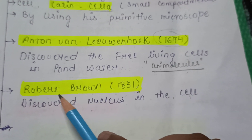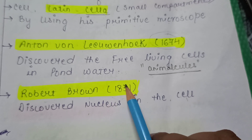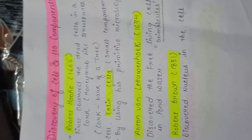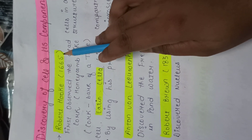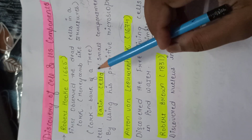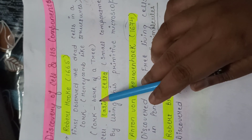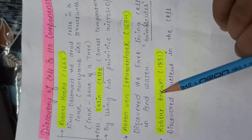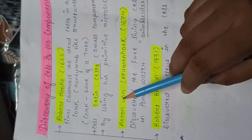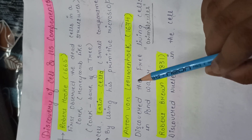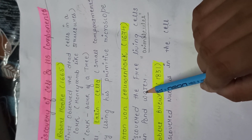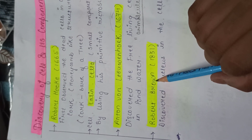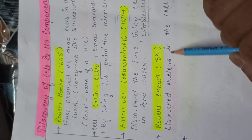After Leeuwenhoek, we have another name: Robert Brown, in the year 1831. He basically discovered the nucleus inside the cell. To summarize: Robert Hooke in 1665 was the first person to observe honeycomb-like compartments in a dead slice of cork and named them cells. Leeuwenhoek observed rainwater and pond water, found minute microscopic organisms, and named them animalcules. Robert Brown in 1831 discovered the nucleus inside the cell.